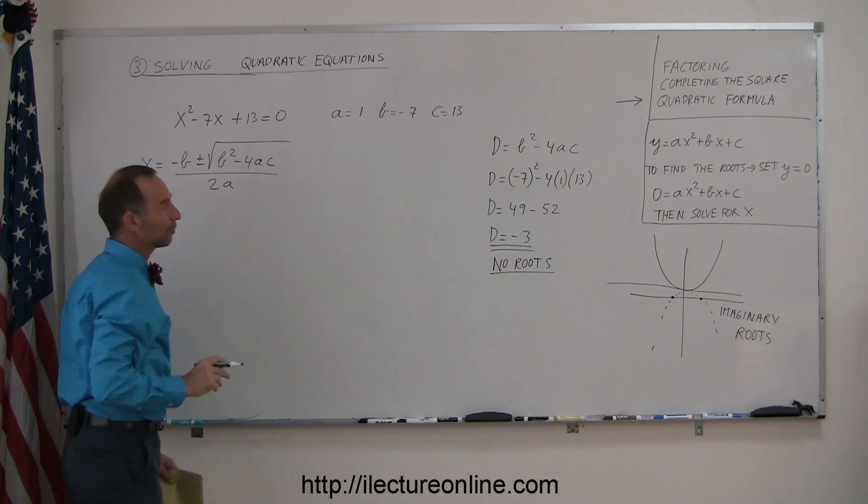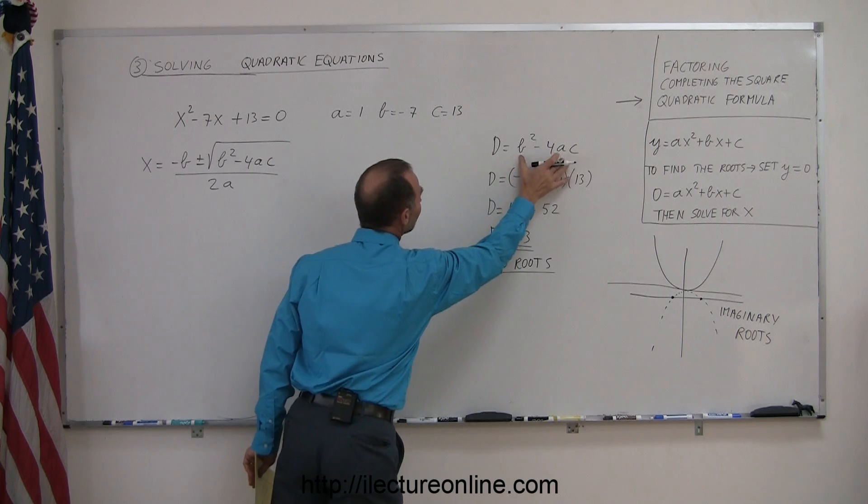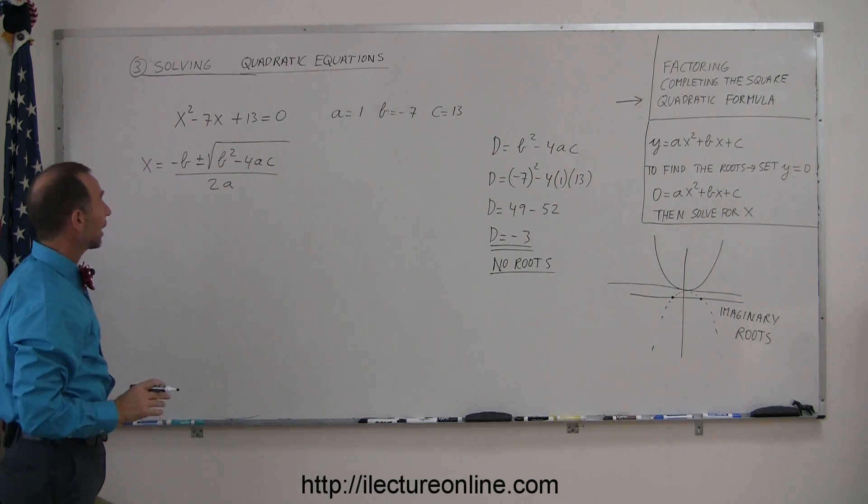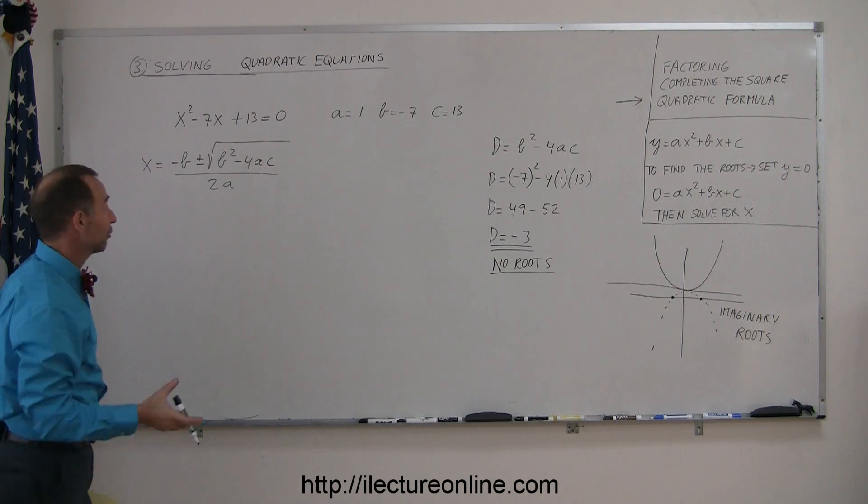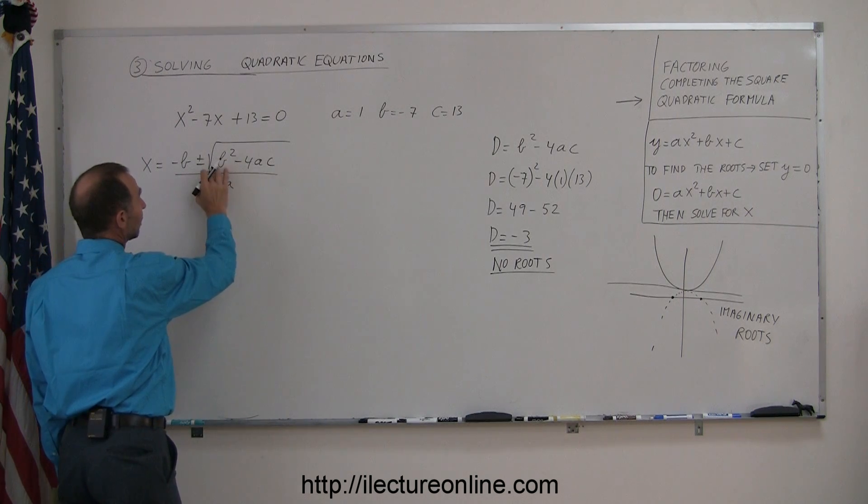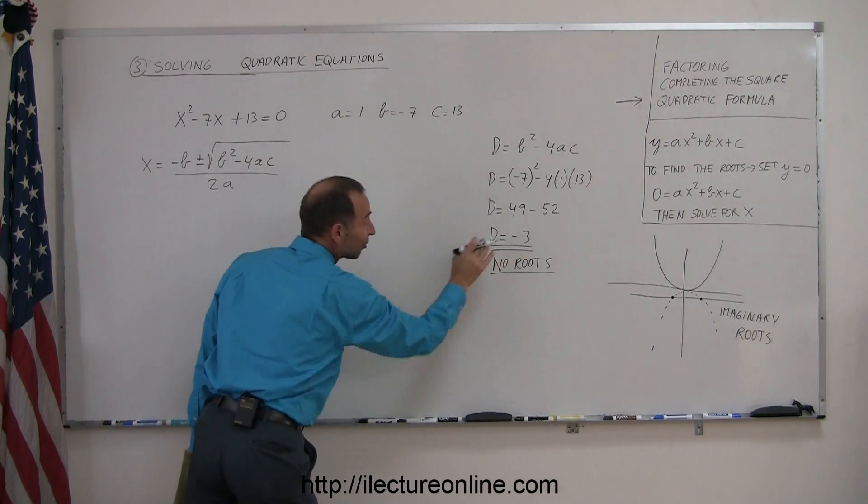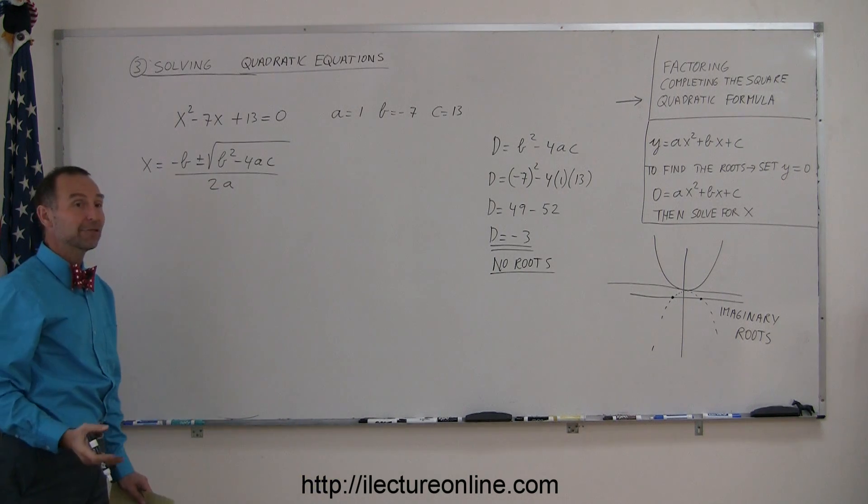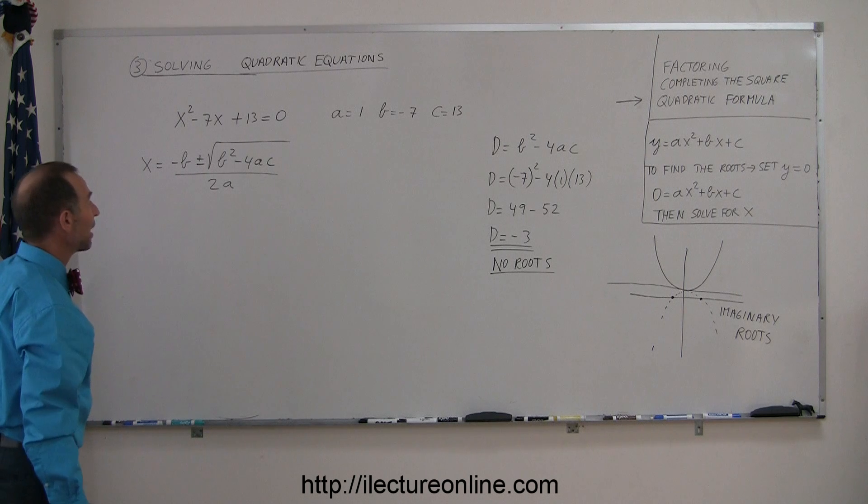And now notice the determinant is nothing different than what goes in the quadratic formula underneath the radical. And you can imagine then, if the number underneath the radical is less than 0, is a negative number, you cannot take the square root of a negative number, so therefore, that becomes an imaginary number, or therefore, there's no real roots.